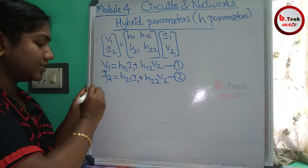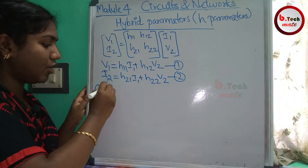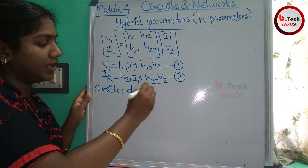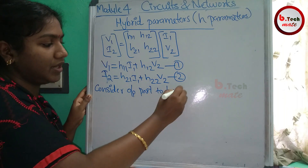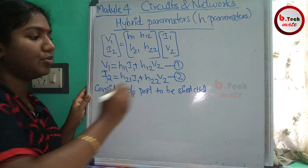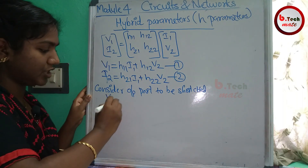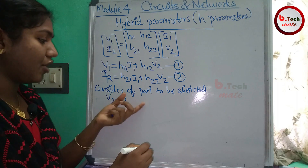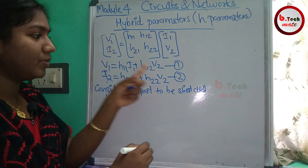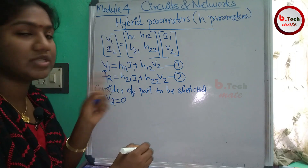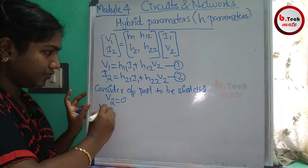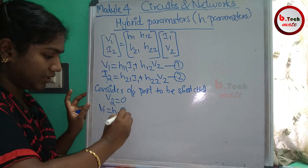Now consider: we have to short the output port. The output port means short circuit. If the output port is short circuit, then the voltage V2 is 0. In the first equation, substituting V2 = 0, V1 is equal to H11·I1. That is, H11 is equal to V1 by I1.